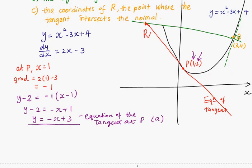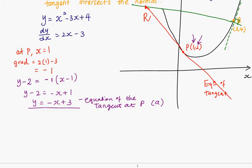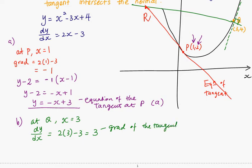So part b, which is finding the equation of the normal at the point Q. So at Q, x is equal to 3. So when we substitute x equals 3 into the dy/dx, the value is 3. Now 3 is the gradient of the tangent at Q. So the gradient of the normal at Q is negative reciprocal, which is negative 1 over 3.